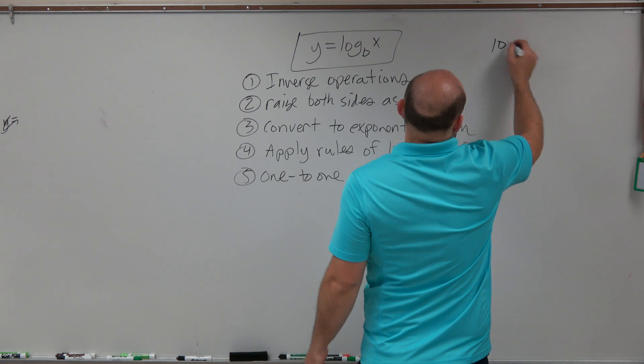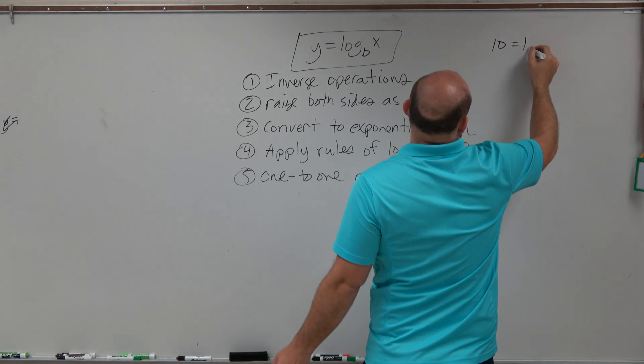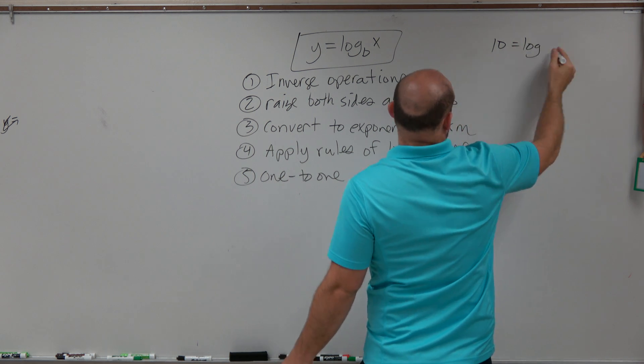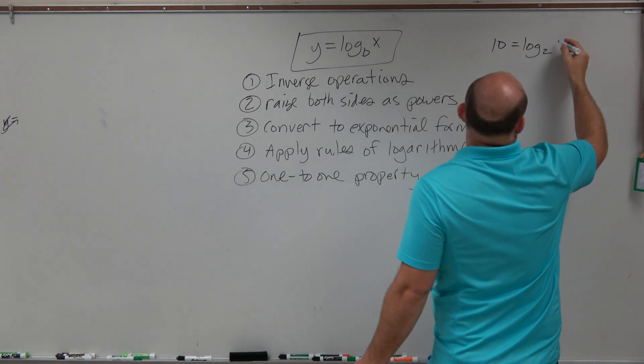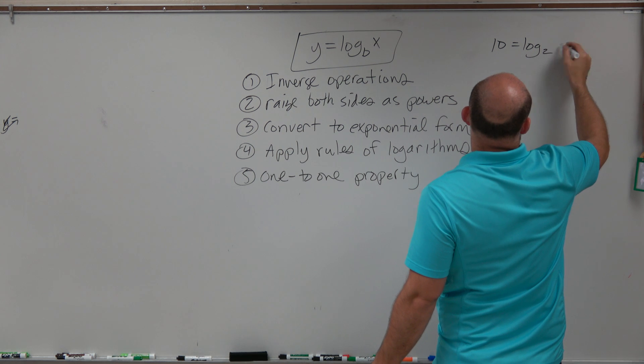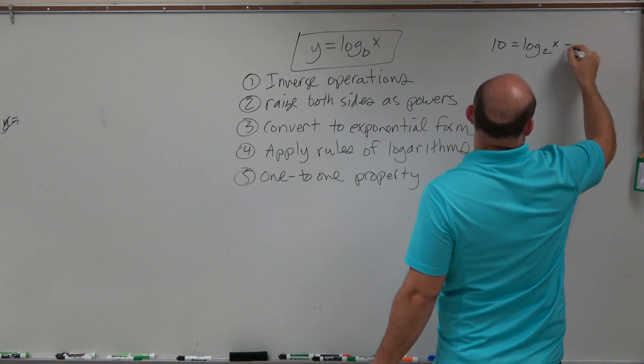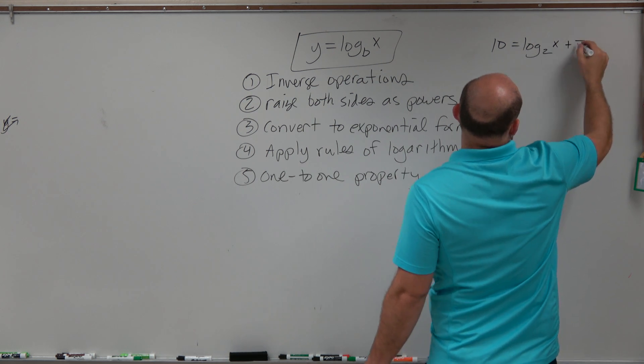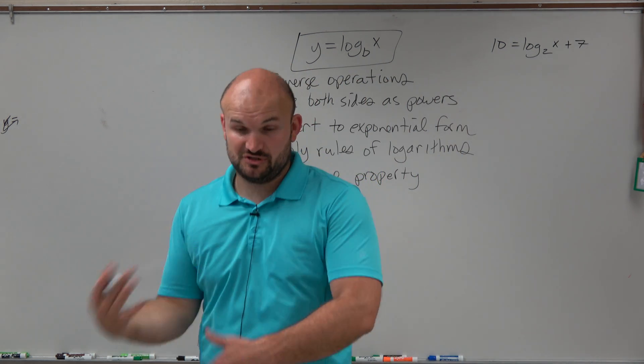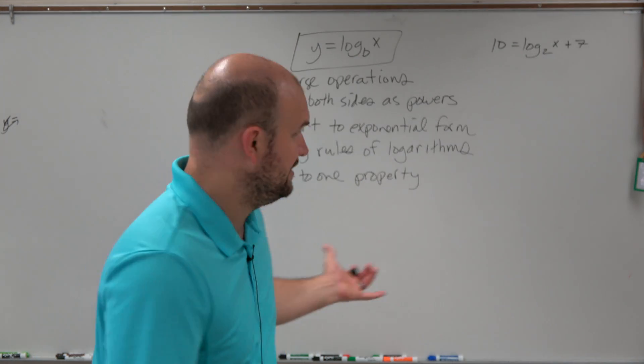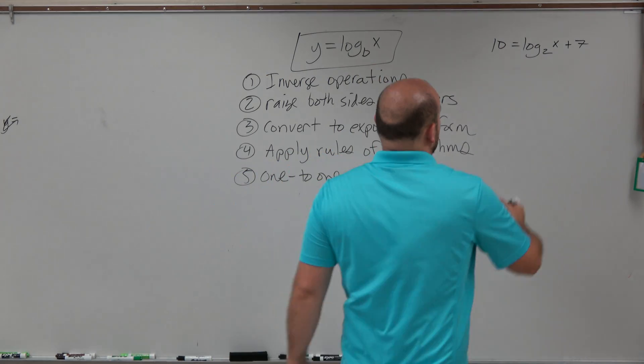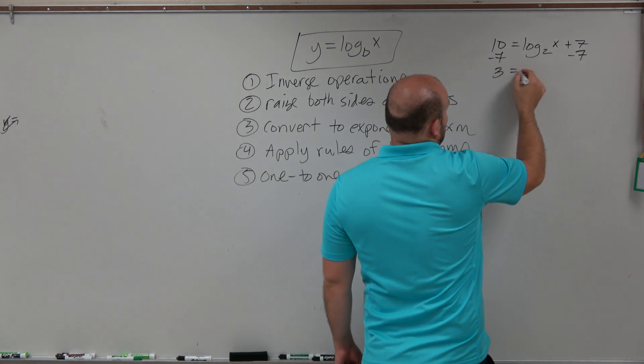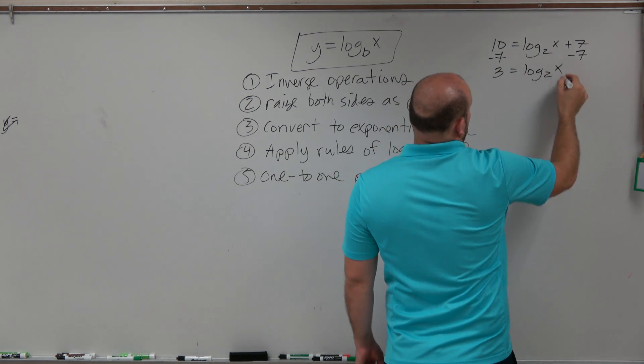So just a basic example, if I have 10 equals log base 2 of x plus 7. So if I wanted to solve for this, I'm trying to solve for x here. Basically what I want to do is go ahead and subtract 7 on both sides, and therefore I have 3 equals log base 2 of x.